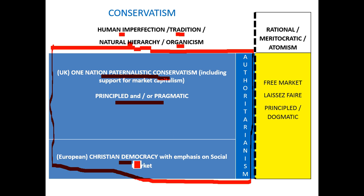And then in Europe and on the continent, the variation of paternalistic conservatism in the form of Christian democracy, which is superficially very similar to the UK version, but with less emphasis on the free market and more emphasis on what's called the social market — a market which can generate wealth in order to provide strong public services to maintain social cohesion.